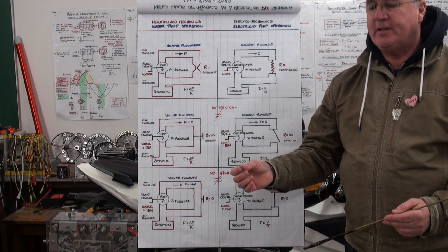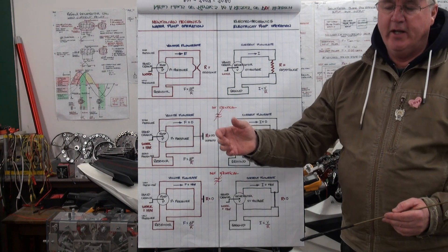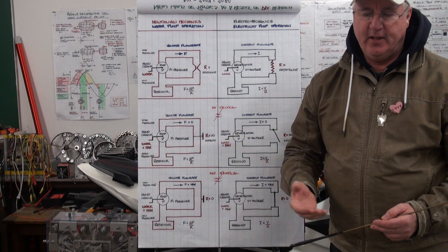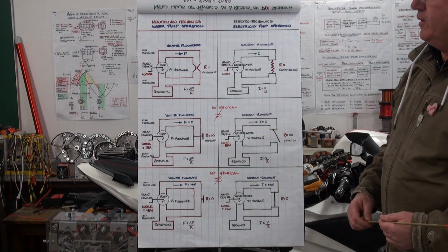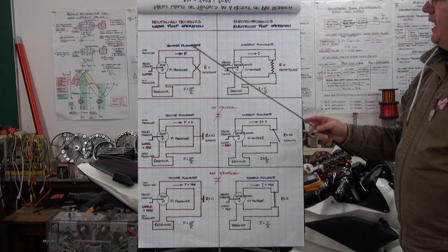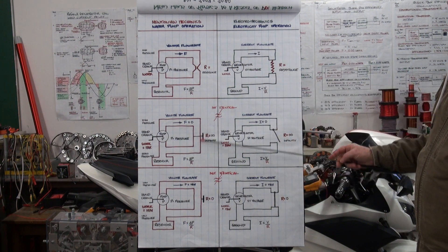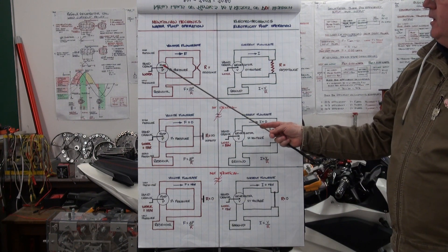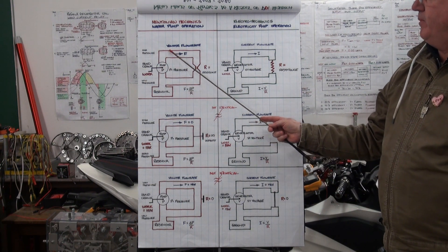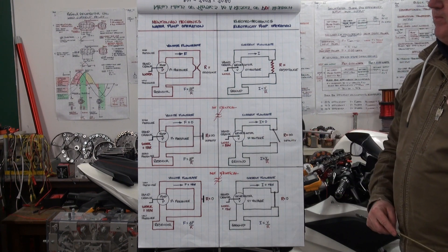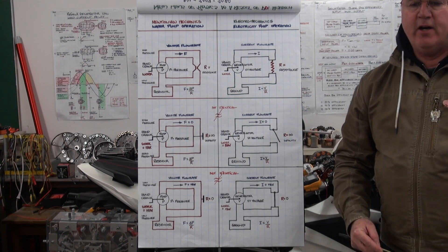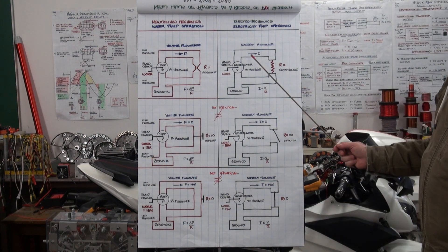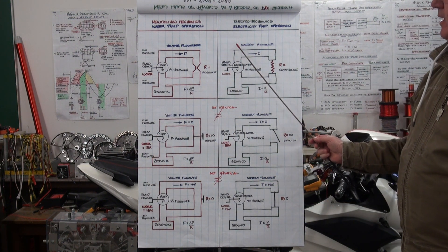Faraday believed that electric current flow in a wire was the result of tensions in the wire. In this video we're going to look at the Newtonian mechanics view of a water pump pumping water through a pipe, and how that model is often used incorrectly to explain electricity and magnetism.